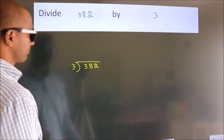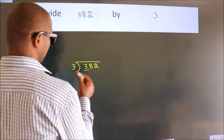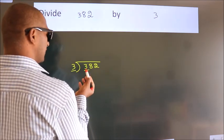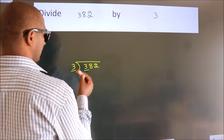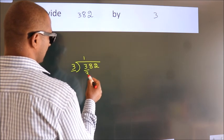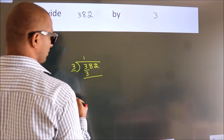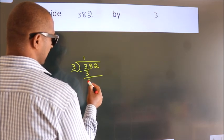Next. Here we have 3, here 3. When do we get 3? In 3 table, 3 once is 3. Now we should subtract, we get 0.